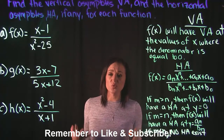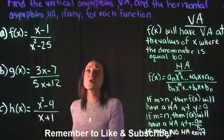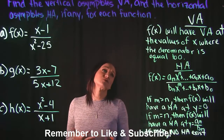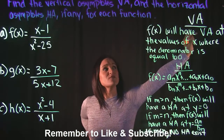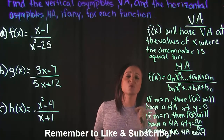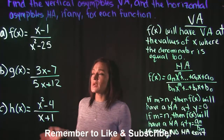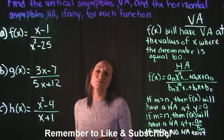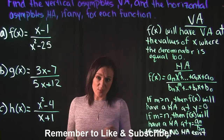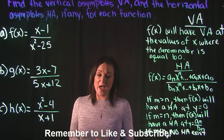It's important that we know the rules on how to do this. For vertical asymptotes, f(x) will have vertical asymptotes at the value of x where the denominator is equal to zero. So in order to find vertical asymptotes, we take our denominator, set it equal to zero, and solve. The values we get for x will be where we have vertical asymptotes.